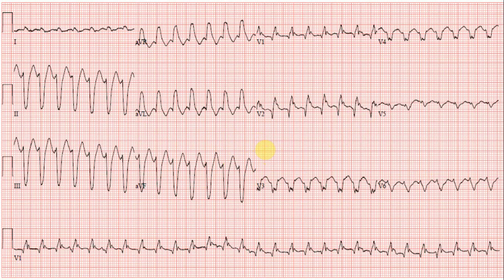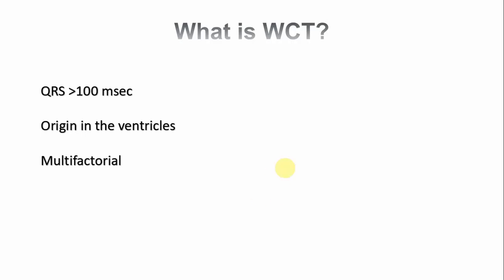Any QRS complex wider than 100 milliseconds is considered a wide complex. If the ventricular rate is more than 110 beats per minute we call it a wide complex tachycardia, which is regular. Importantly, 80% of wide complex tachycardias are actually VT, so when we talk about wide complex tachycardia we are mostly talking about VT.